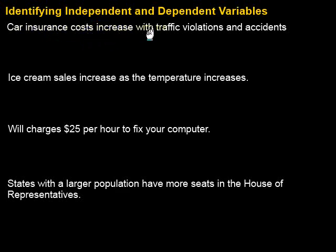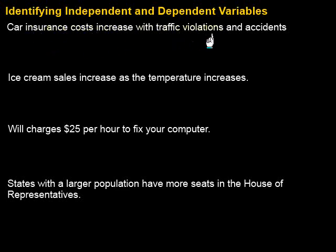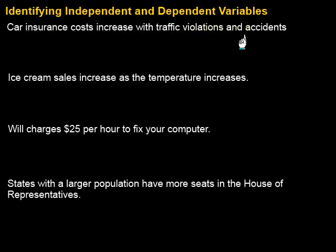It says car insurance costs increase with traffic violations and accidents. What's the other thing that we would need to know? We'd need to know how many traffic violations and accidents there were. So what controls what? Do the number of traffic violations and accidents control the costs, or do the costs control how many violations and accidents you've had? There might be some slight control if your costs are very high to avoid violations, but it's pretty clear that the number of traffic violations and accidents controls our car insurance costs.